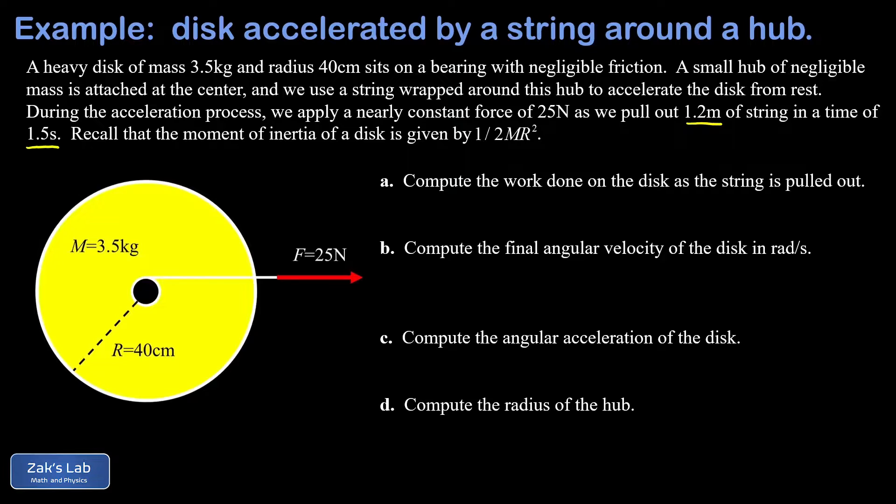So in part A, we're going to find the work done as we pull that string out. In part B, we'll use the work energy theorem to get the final angular velocity of the disk. In part C, we compute the angular acceleration of this disk. And then part D is a really unusual question. We actually have everything we need to compute the radius of that small hub at the center.